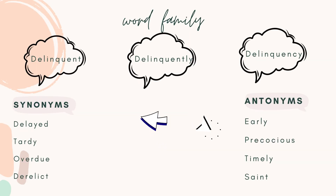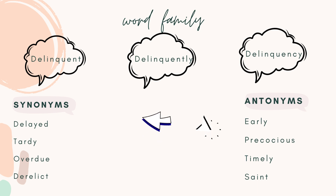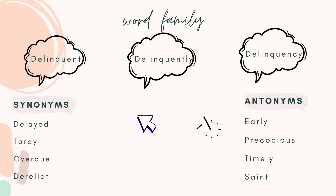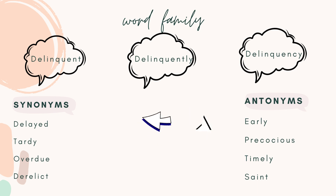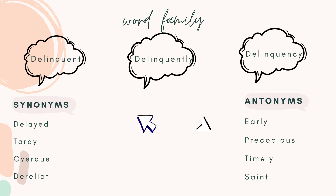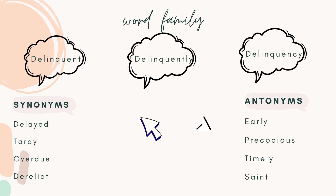Word family: delinquent, delinquently, delinquency. Synonyms: delayed, tardy, overdue, derelict. Antonyms: early, precocious, timely.